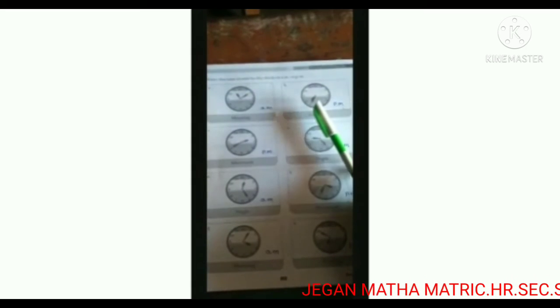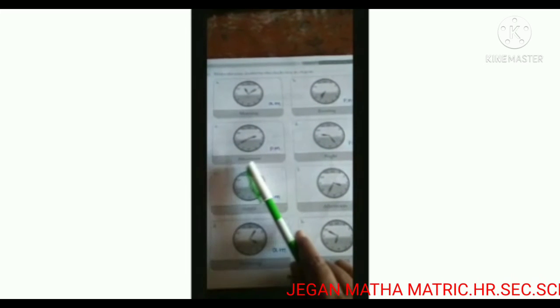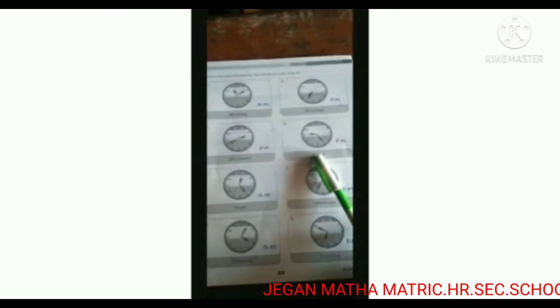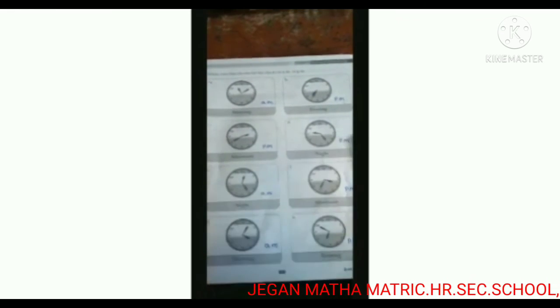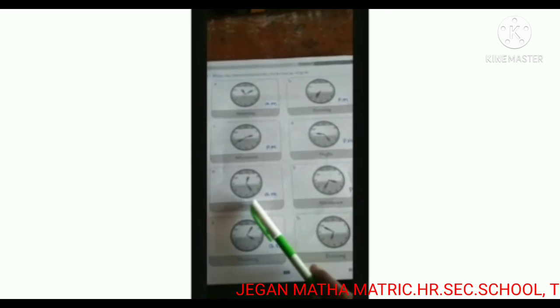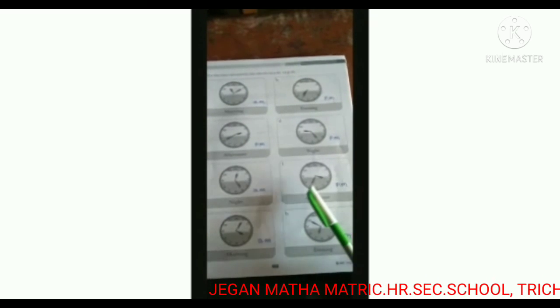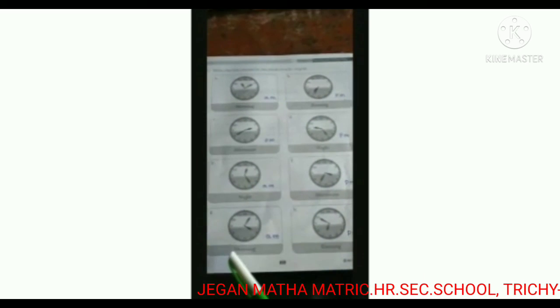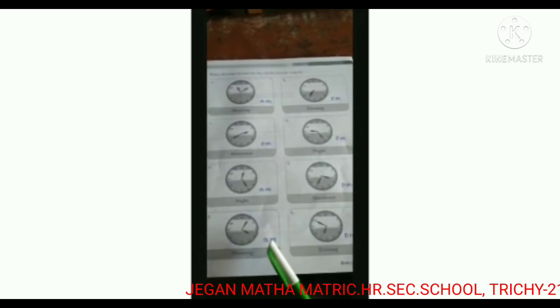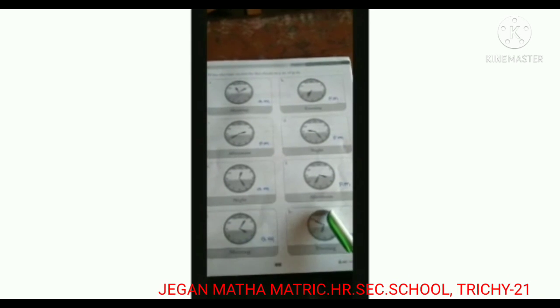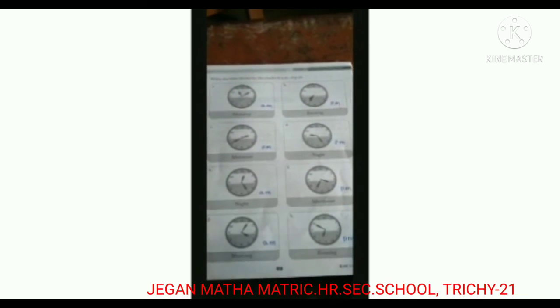Once again: morning ten ten means A.M. Evening eleven thirty-five means P.M. Afternoon two forty is P.M. Night nine twenty-five means P.M. Night twelve twenty-five is A.M. Afternoon three thirty-five means P.M. Morning four oh-five means A.M. And evening — sorry — six fifty, or ten minutes to seven, means P.M.